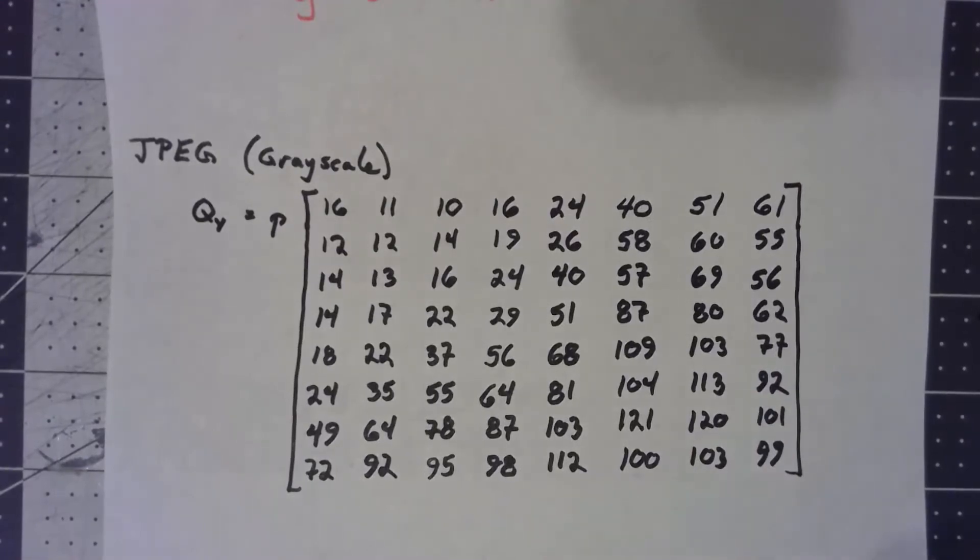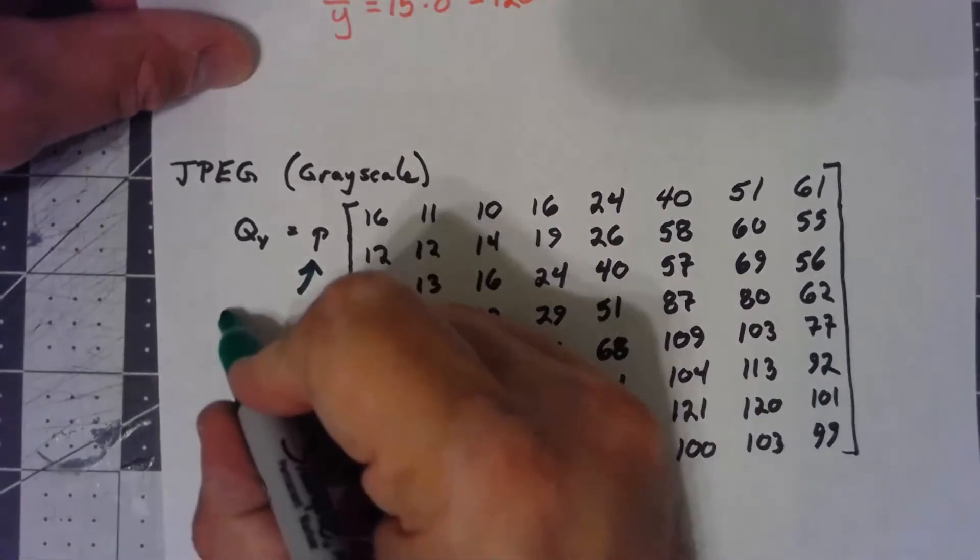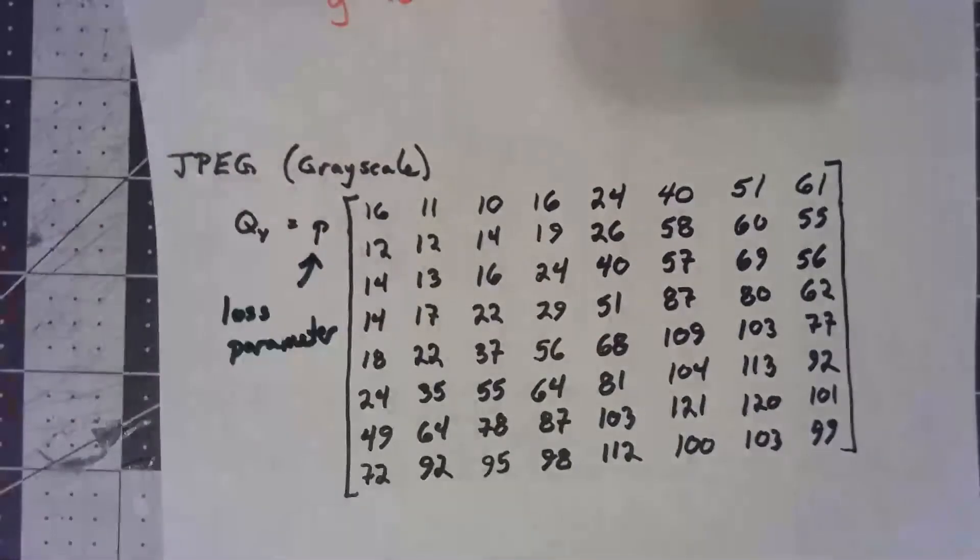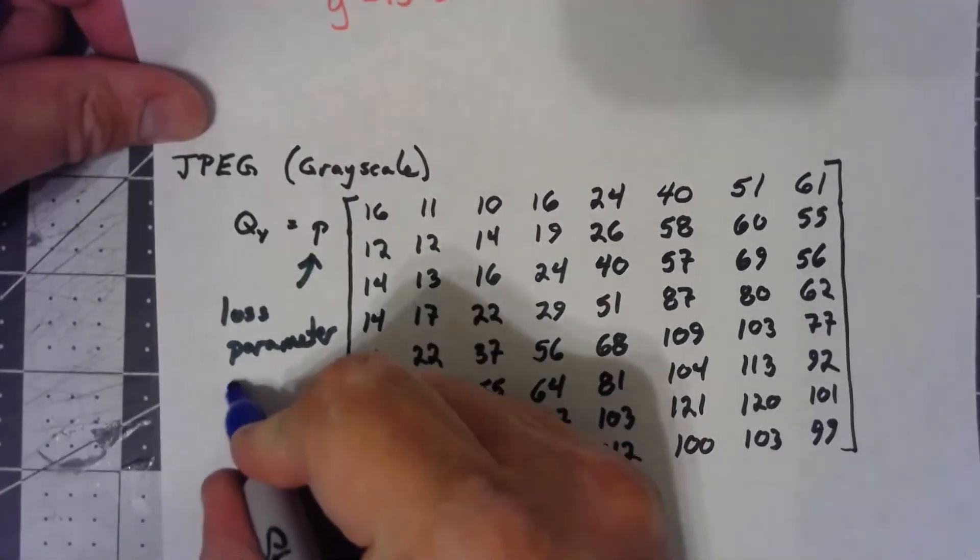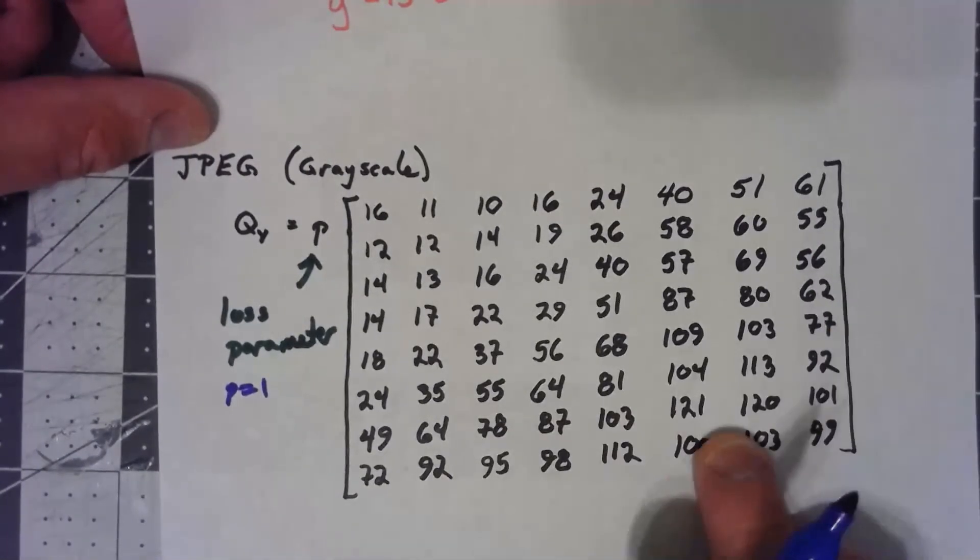But one thing to notice is that there is this P here on the outside. This is called the loss parameter. And the basic idea is that this is something that's set when you choose to compress to encode a JPEG image. And the higher the value, the more lossy it gets. From experiments, they found that if you set P equals 1, there's certainly still some compression going on. There's certainly still quantization happening. These are still fairly big numbers we've got here.